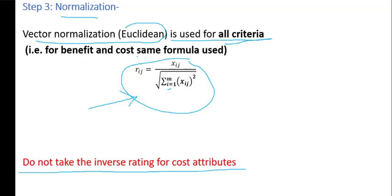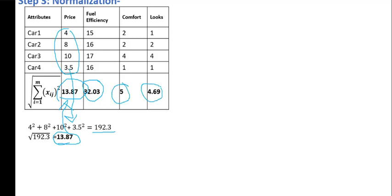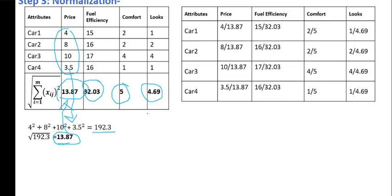First we calculate the summation of X_ij squared. For example, 4 squared plus 8 squared plus 10 squared plus 3.5 squared comes out to be 192.3. Next I need to calculate the square root of this, which is 13.87. Similarly we do it for fuel efficiency, for comfort, and for looks.